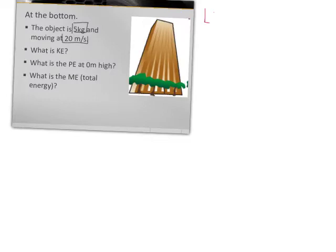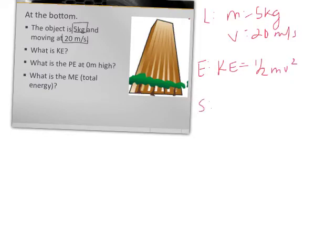We know that mass is 5 kg. We know that V is 20 meters per second. And then our equation, KE equals one half MV squared, which is going to be KE equals one half times 5 times 20 squared. Or, hopefully this number looks familiar, 1,000 joules.